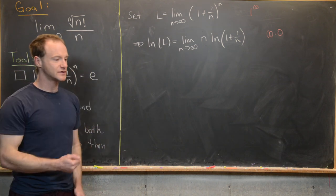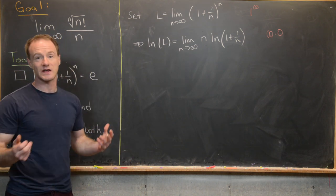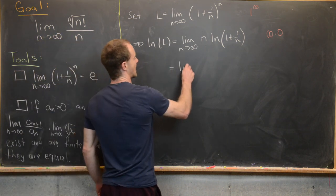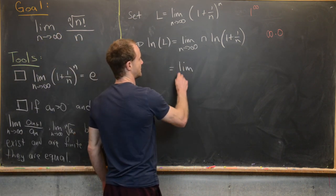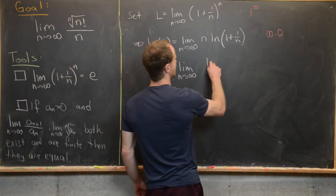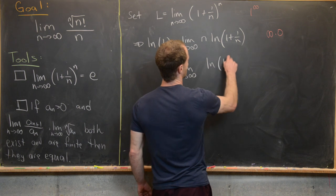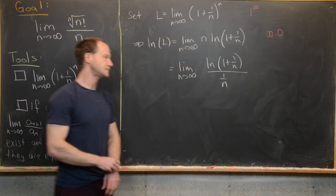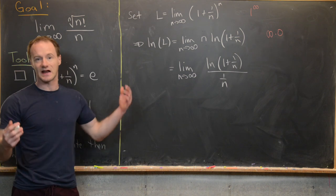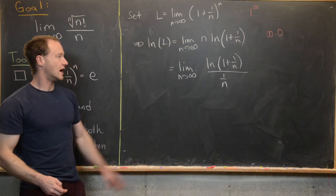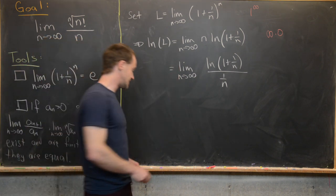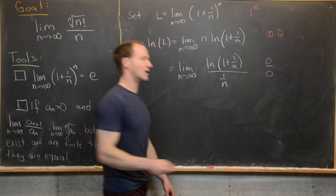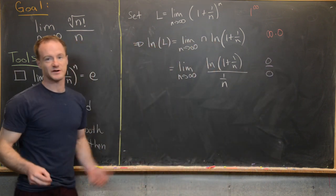That's close to the type we can apply L'Hôpital's rule to. We rewrite the limit as n approaches infinity of the natural log of one plus one over n, all over one over n. Now this is of type zero over zero, so we have it set up for L'Hôpital's rule.